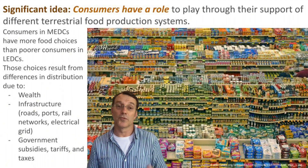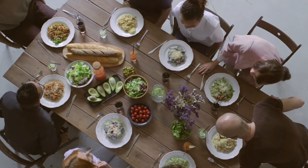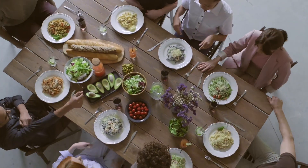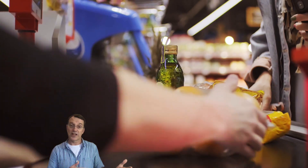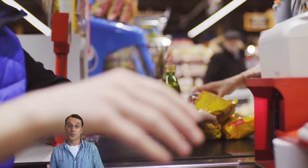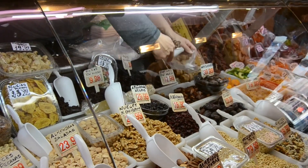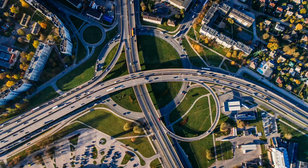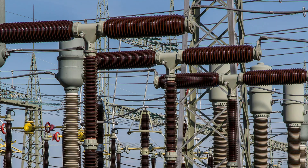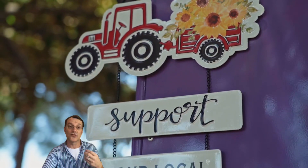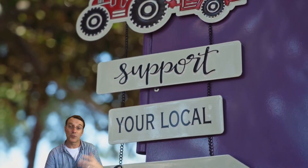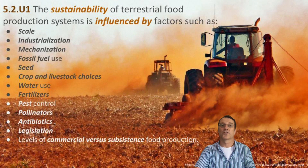Consumers play a big role in the system through their food choices, which can support or challenge different production methods. Food availability varies greatly around the world. In more developed countries, consumers have a wide array of choices in supermarkets. This abundance stems from differences in wealth, infrastructure like roads and electricity, and government policies. However, this uneven distribution can lead to conflicts, especially as suitable farmland isn't equitably distributed across the world.